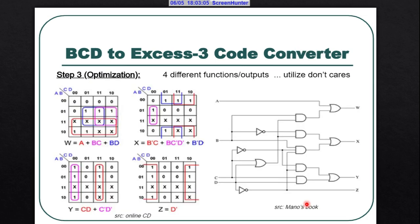To draw the circuit of the XS3 converter, we draw the K-map using the 4 outputs W, X, Y, and Z, giving us 4 equations — one for W, one for X, one for Y, and one for Z. By plotting these equations we obtain the circuit of the XS3 code converter.